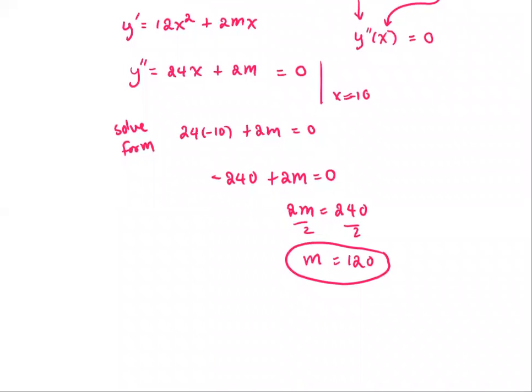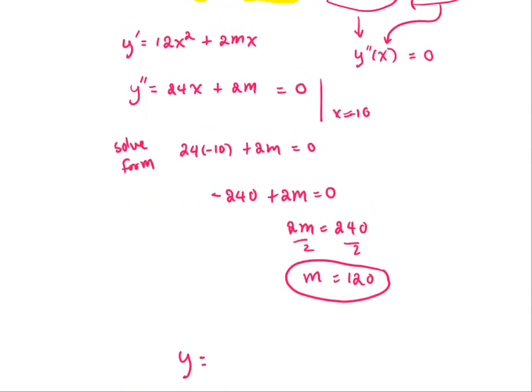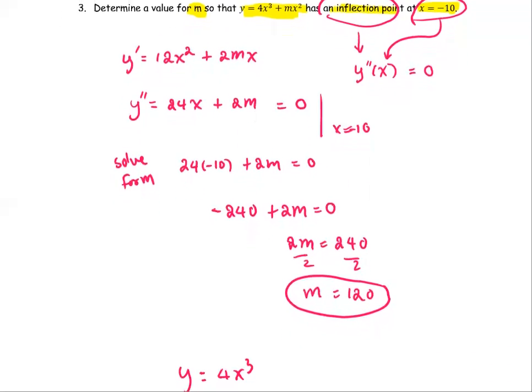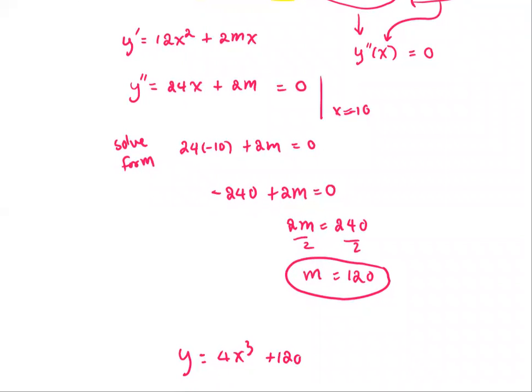If the question asks for the full function form, the full function form would be y equals 4 times x to the third plus 120 times x to the second.